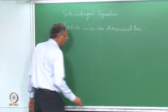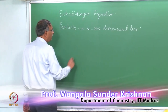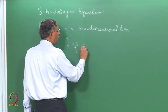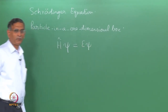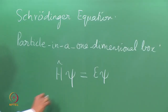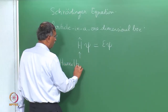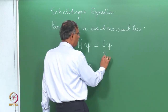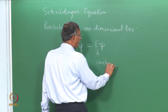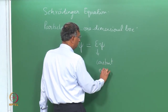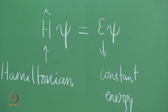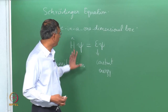Let us take a quick look at the Schrödinger equation. In the earlier lecture, I mentioned that I would be talking about the time-independent Schrödinger equation, in which this quantity is referred to as the Hamiltonian, which is a constant with dimensions of energy. The function psi is the function that we want to find by solving this equation.